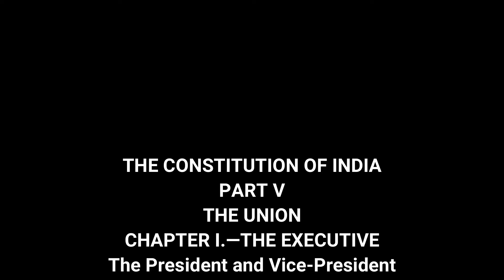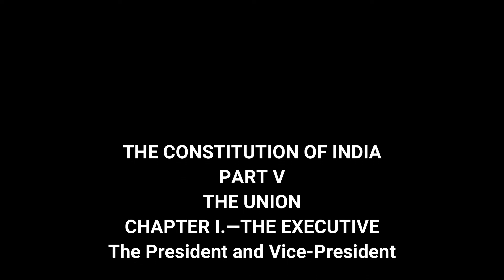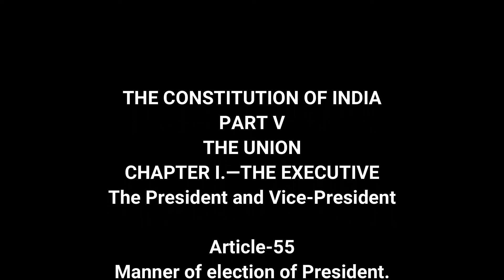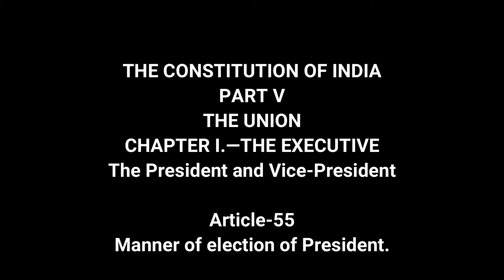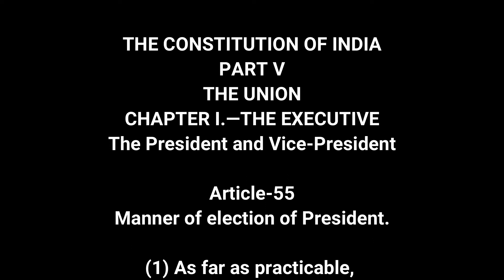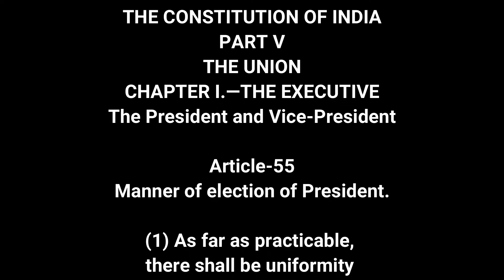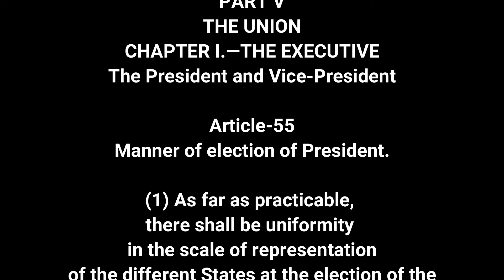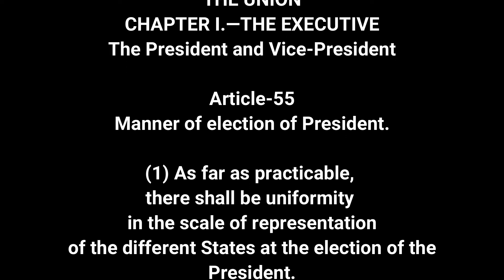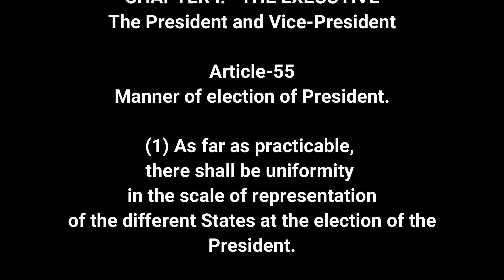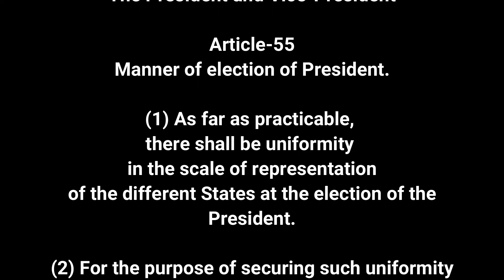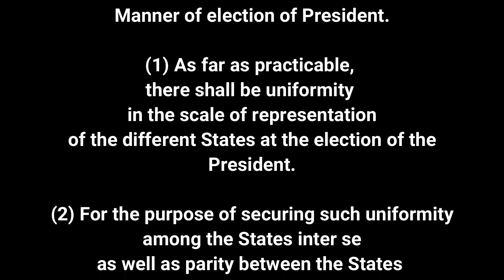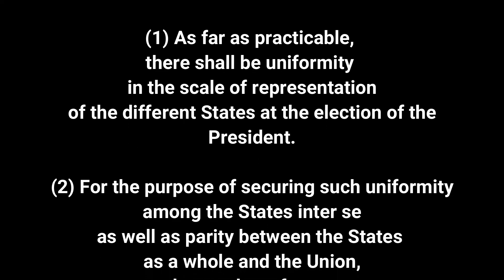The Constitution of India, Part 5 — The Union, Chapter 1 — The Executive: The President and Vice President. Article 55: Manner of Election of President. Clause 1: As far as practicable, there shall be uniformity in the scale of representation of the different states at the election of the President.